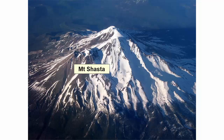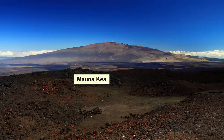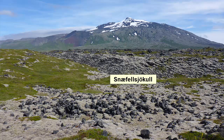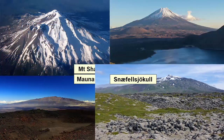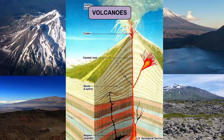Mount Shasta in Northern California, Mount Fuji in Japan, Mauna Kea in Hawaii, and Snæfellsjökull in Iceland. What type of mountains are all these? Volcanic. When magmas erupt on Earth's surface they can produce layers of lavas, ash, or cinders that pile up above the surrounding land. We call these taller landforms volcanoes, volcanic domes, or cones.